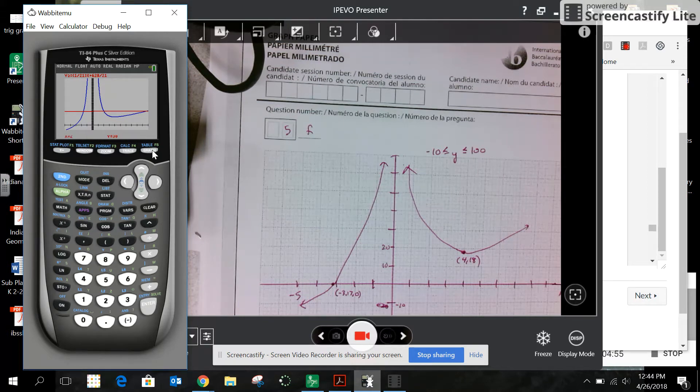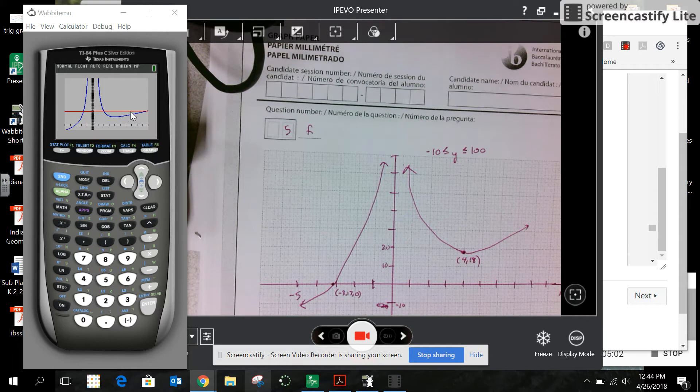So it doesn't look perpendicular at x equals 2, but that just may be your scale. So if you're not sure, you calculate intersection, enter, enter, and I make a guess.